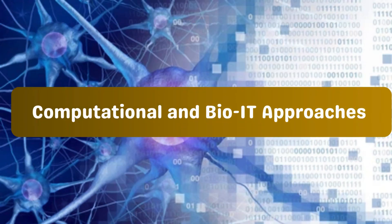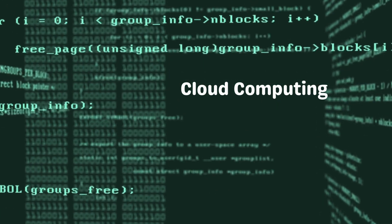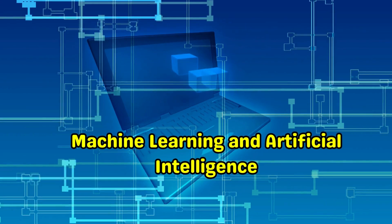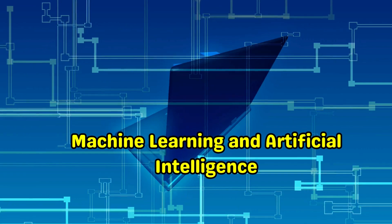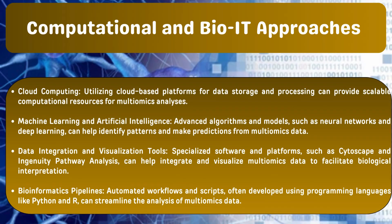These are the computational bioinformatics tools that power Multiomics research. First, we have cloud computing, which gives us the ability to handle huge datasets and run complex analyses from anywhere. Next, we have machine learning and AI, which offer algorithms that can find patterns in datasets we might otherwise miss, enabling predictions and uncovering hidden insights. Then there are data integration and visualization tools that help combine information from different sources. Finally, bioinformatics pipelines streamline the process and save time and effort.